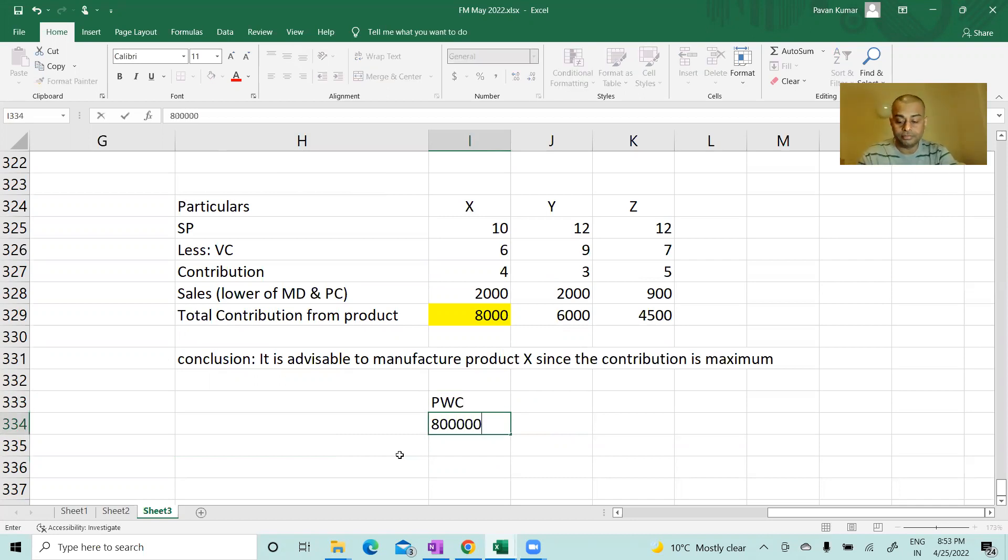For example, after becoming a chartered accountant, you got a job. So PWC you got a job - they said 8 lakhs they'll give. Infosys you got a job - they said 9 lakhs they'll give. Ernst & Young said 7 lakh 85,000 they'll give. Imagine just campus placement - these three - and you got offer letter from all the three. Beautiful assumptions, yeah, I know. So you obviously will accept Infosys.